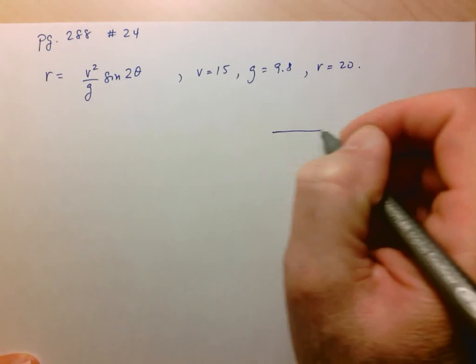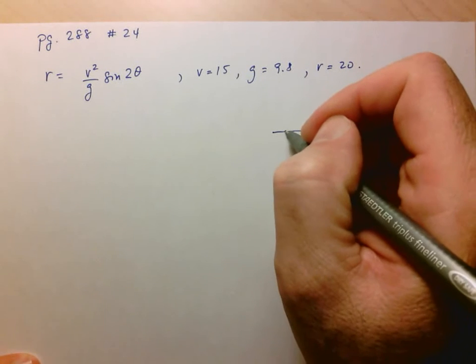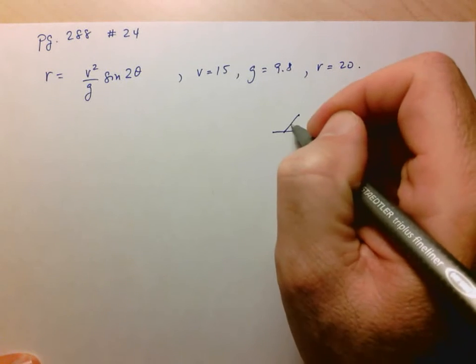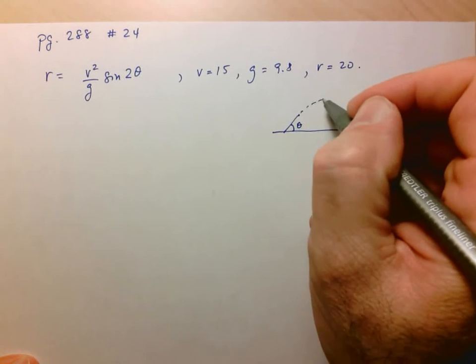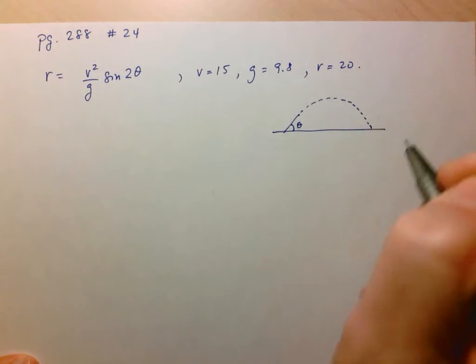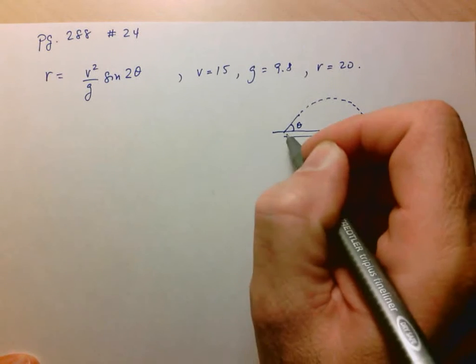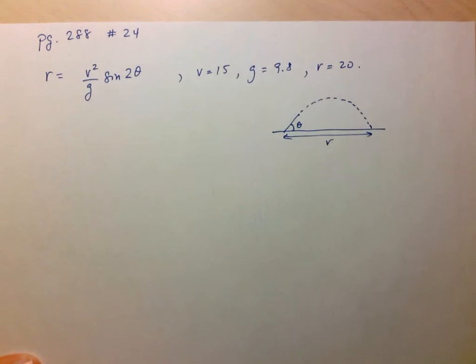Essentially, we have a cannon that's going to be set at a particular angle, and this equation will tell us how far the person should land.